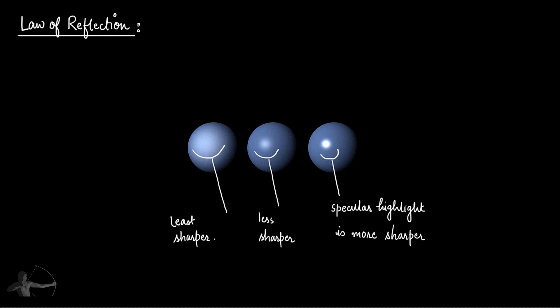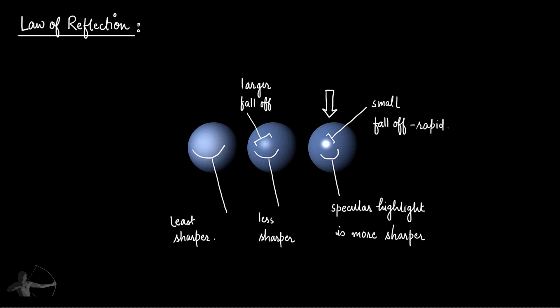Bui Tuong Phong, famous as Phong, observed this phenomenon. He observed that for very shiny surfaces the specular highlight was small and the intensity fell off rapidly, while for less shiny surfaces the specular highlight was large and fell off slowly. The more shiny surface has a small highlight with rapid fall-off, while a less shiny surface has a larger highlight with a relatively slow fall-off.